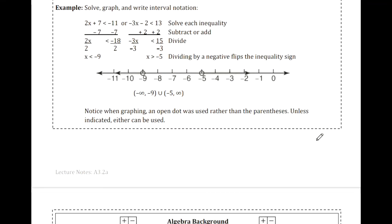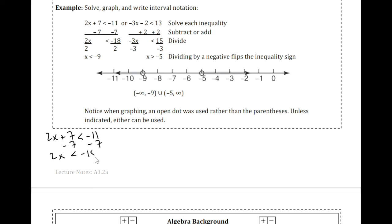Sometimes we'll have more work to do before we can graph. In this example, we need to solve both of the inequalities before we can graph them and write them in interval notation. For 2x plus 7 less than negative 11, we move the 7 over, and we get all the x that are less than negative 9.